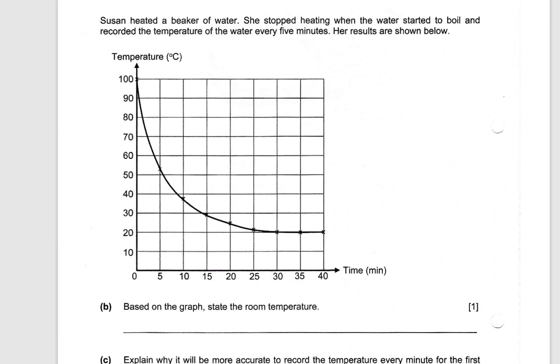Susan heated a beaker of water. She stopped heating when the water started to boil and recorded the temperature of the water every five minutes. So from 100 degrees Celsius, the temperature of the water started to drop. So her results are shown below. Based on the graph, state the room temperature.